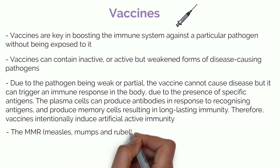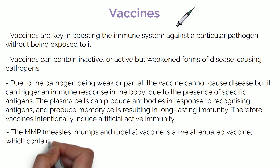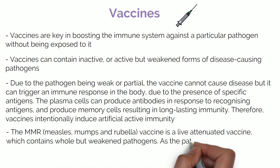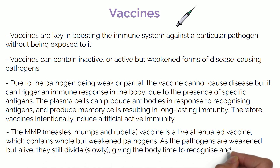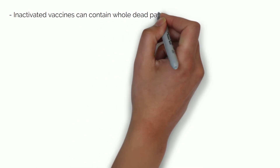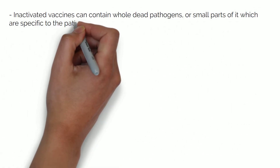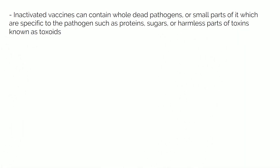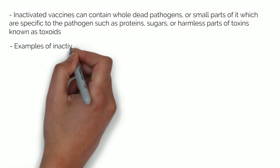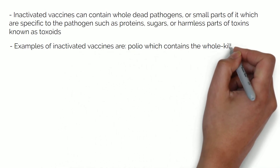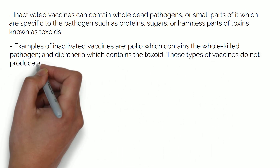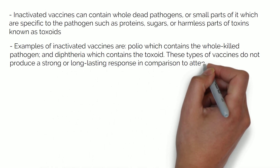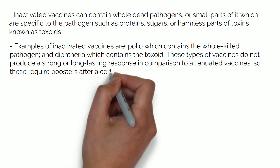The MMR, or measles, mumps and rubella vaccine, is a live attenuated vaccine which contains whole but weakened pathogens. As the pathogens are weakened but alive, they still divide, but slowly, giving the body time to recognise and fight the pathogen. Inactivated vaccines can contain whole dead pathogen or small parts of the pathogen specific to it, such as proteins, sugars, or harmless parts of toxins known as toxoids. Examples of inactivated vaccines are for polio, which contains the whole killed pathogen, and diphtheria, which contains the toxoid. These types of vaccine do not produce a strong or long-lasting response in comparison to attenuated vaccines, so they require boosters after a certain number of years.